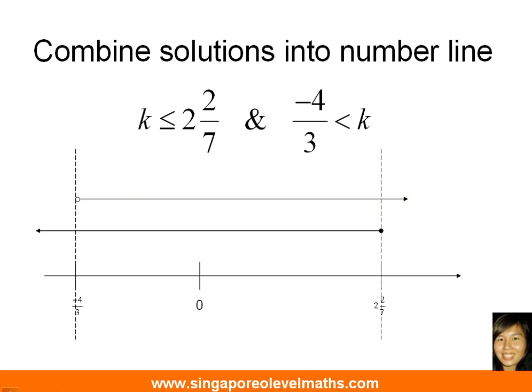Once you have completed this step over here, then the last step will involve you shading the common area that the two number lines share. So I have shaded that and that will be our answer. So it involves you to actually write the answer in the form of inequality. So this is how we go about doing it. k must be more than negative 4 over 3, less than or equals to 2 and 2 over 7.